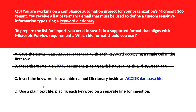Option C: Insert the keywords into a table named 'dictionary' inside a database file (.accdb). ACCDB files are used for Exact Data Match, not keyword dictionaries — incorrect. Option D: Use a plain text file placing each keyword on a separate line for ingestion. Microsoft 365 keyword dictionaries require a line-separated plain text file where each word or phrase appears on its own line. Option D is the right choice.